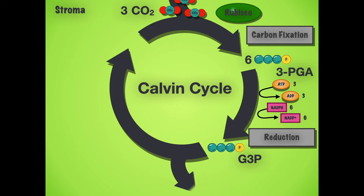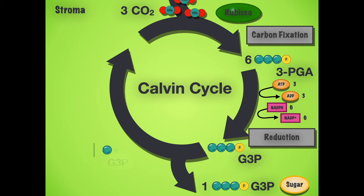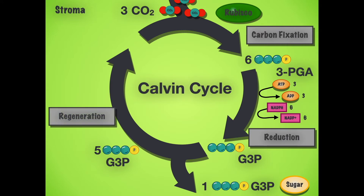After the reduction phase, we get G3P. One of these G3P molecules is output out of the Calvin cycle and will eventually turn into sugar — glucose or fructose, depending on the plant. Five more G3P molecules go back into the Calvin cycle to keep it functioning.